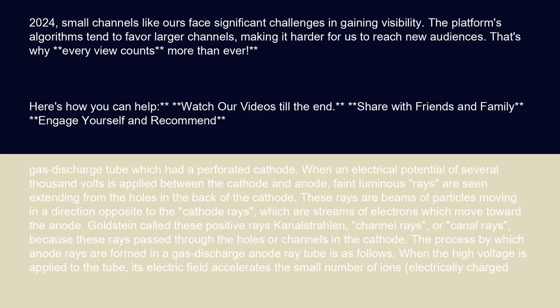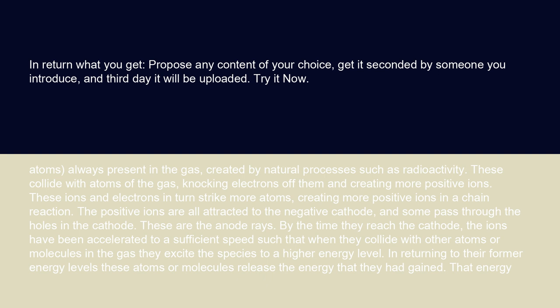The process by which anode rays are formed in a gas discharge tube is as follows. When the high voltage is applied to the tube, its electric field accelerates the small number of ions — electrically charged atoms — always present in the gas, created by natural processes such as radioactivity. These collide with atoms of the gas, knocking electrons off them and creating more positive ions. These ions and electrons in turn strike more atoms, creating more positive ions in a chain reaction.